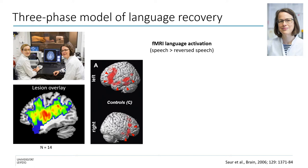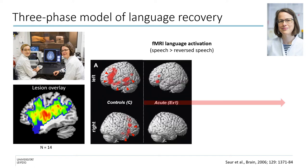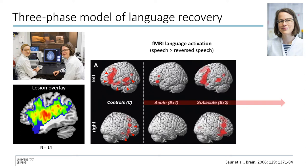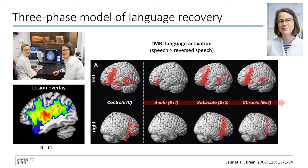In patients, over the time of recovery, activation changed in three phases. In the acute phase, in the first days after stroke, we observed decreased language activation in the entire network. In the subacute phase, about two weeks after stroke, activation increased in bilateral frontal and left posterior temporal cortex. In the chronic phase, about one year after stroke, frontal activation normalized to the amount observable in healthy controls.